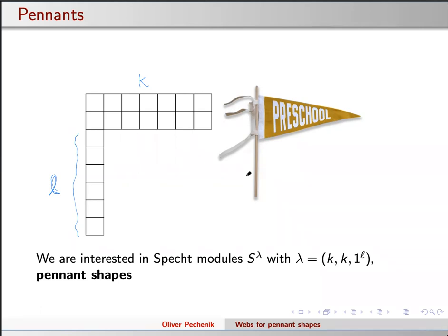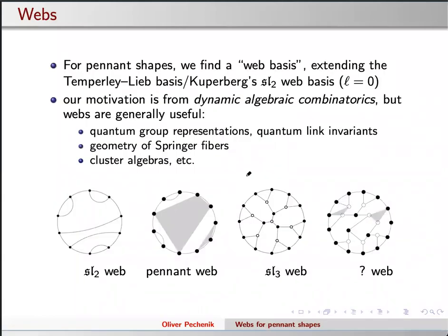Let's think about what's going on here. Let's think about first the case l equals zero — so no flagpole, just two-by-n rectangles. In this case there's something really nice and well understood: you get a basis of your Specht module coming out of what fits into Kuperberg's story of webs. It's exactly what you would get for the webs associated to the algebra SL2. You get a diagrammatic basis labeled by non-crossing matching diagrams — you have points around a circle and you pair them up such that all lines pairwise don't intersect.